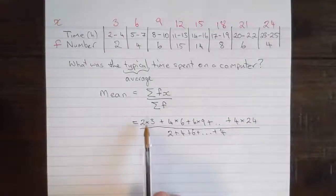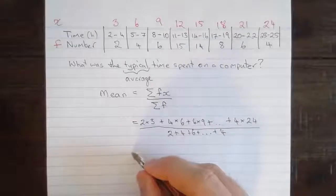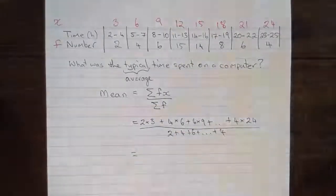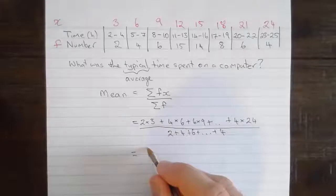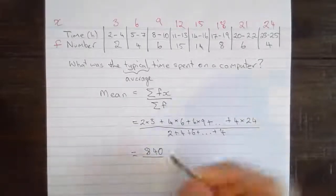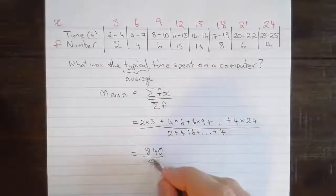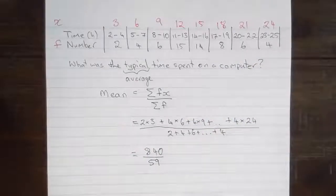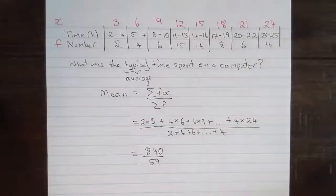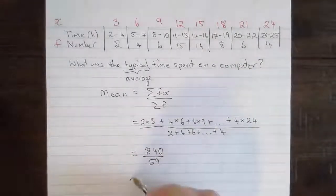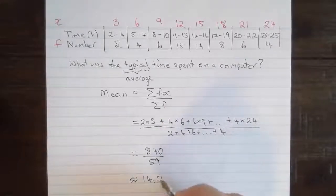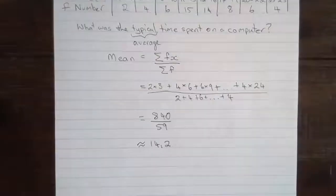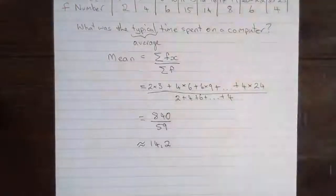On the top, we multiply and then add each term. I've used my calculator, and I find that I have 840. On the bottom, we have 59, when we add up all of the F values. Again, moving to our calculator, we can find that that's approximately 14.2. So we have that the mean of the data we've been presented with is 14.2.